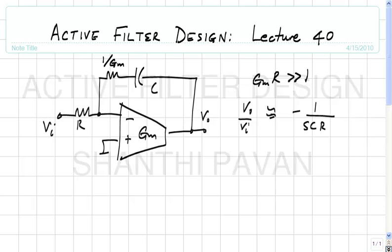This resistor is called the zero-cancelling resistor because it cancels the RHP zero which would otherwise be present. If this resistor tracks the GM of the transconductor, we get approximately minus 1/(SCR) times a correction factor close to 1, which means CR has effectively been modified by a small value.